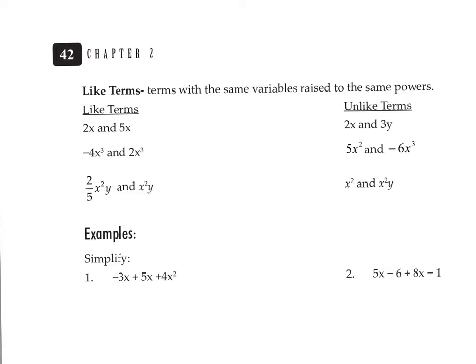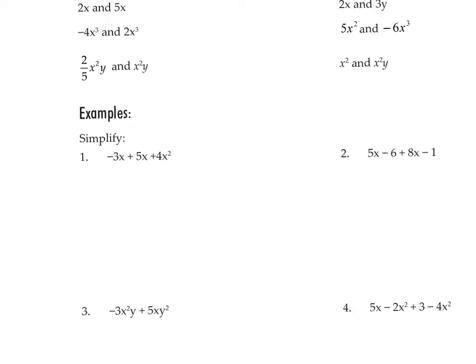In algebra, you can multiply anything, which is what we just practiced. But you can only add and subtract like terms. In example 1, we look for like terms first. Negative 3x and 5x have the same variable, so these like terms get added together by adding the coefficients: negative 3 plus 5 is 2, so that becomes 2x. The 4x squared does not have anything to add to, so it's just hanging on here. This is simplified now because we've combined all the like terms.